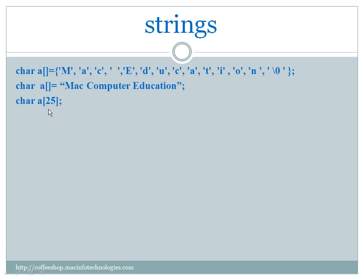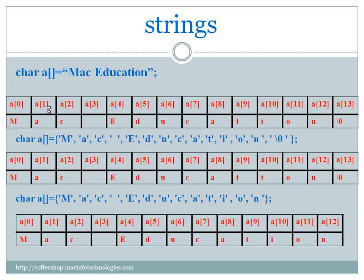We can also declare a variable of size 25 and initialize it later or take input from the keyboard. When we say 'Mac computer education' in double quotes, it is saved in the computer with a null character appended at the end. We don't have to put a null character when we initialize using double inverted commas.